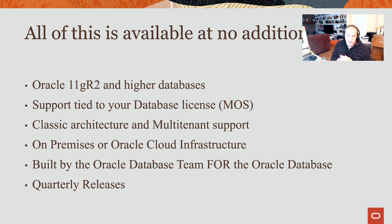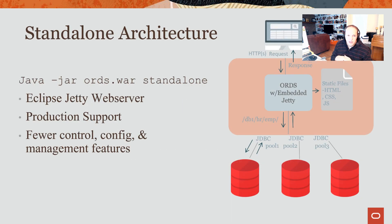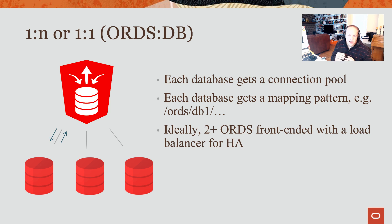ORDS is developed and maintained by the database team for the database team, so as new database features come in, we're there to build up the APIs and tooling around those. Like many other database tools products, ORDS does quarterly releases — so every three months you should see an update for both cloud and on-prem. ORDS is a Java application; you can deploy it as a standalone process — it includes an embedded Jetty web server — or you can roll it into an existing Tomcat or WebLogic mid-tier. Each database connection pool serves a database, so you could have one ORDS instance supporting 50 databases with 50 JDBC connection pools, one for each. They each get their own URI mapping pattern so ORDS knows which database a request goes to.